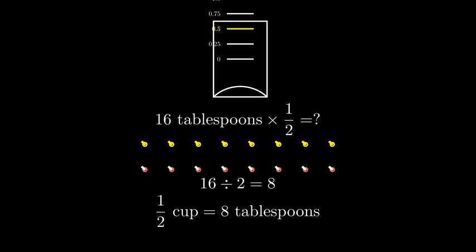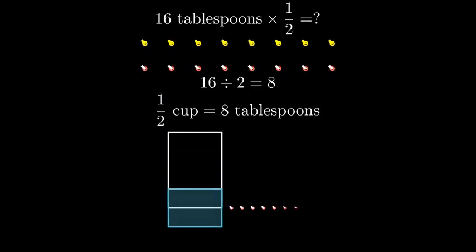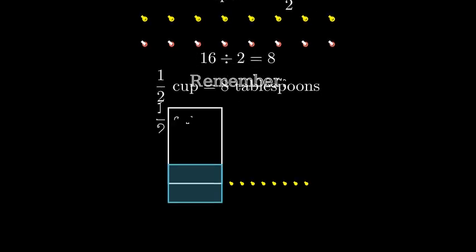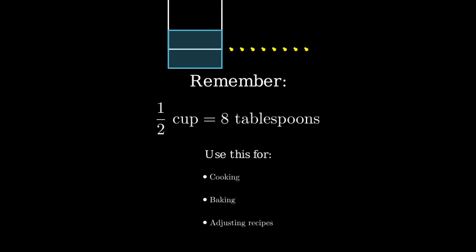Here's another way to visualize our answer. One half cup is the same as eight tablespoons. These eight tablespoons would fill exactly half of our measuring cup. So remember, when a recipe calls for one half cup, you can use eight tablespoons instead.